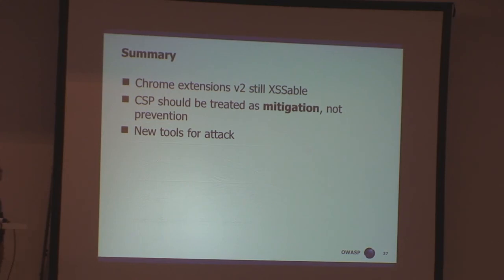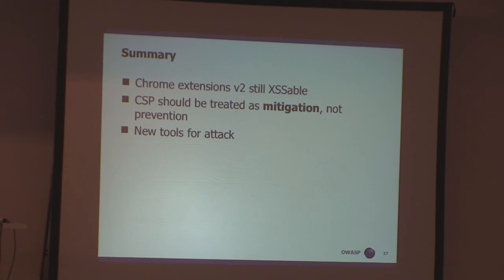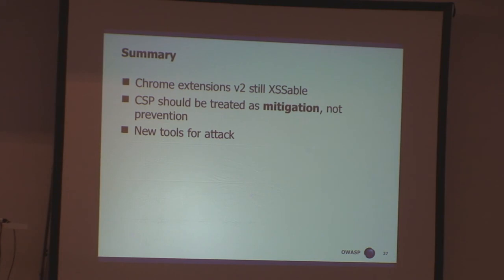To quickly sum it up: Chrome extensions version 2 are still possible to XSS. CSP — this is actually a quote by Adam Barth, who I was emailing about it — CSP should be treated as a mitigation from cross-site scripting vulnerabilities and not as a prevention mechanism. This is why they don't really care about such a vulnerability as the one I just presented — the iframe should be sandboxed, basically. There's a new attack tool called Mosquito, go check it out. And don't be scared of content security policy because it's still bypassable even in Chrome extensions.